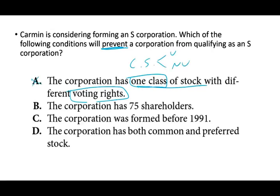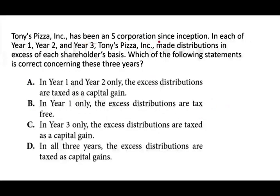The corporation has 75 shareholders — that's okay, the limit is 100. The corporation was formed before 1981 — that's okay too. But the corporation has both common and preferred stock — hold on. You can only have one class of stock, which is common. You cannot have preferred stock. So that will prevent you from having an S corporation.